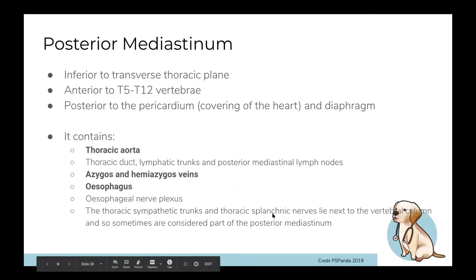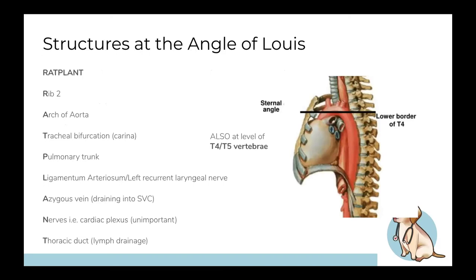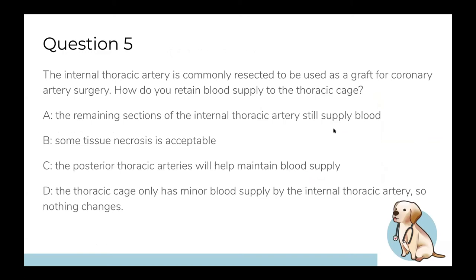Returning to structures at the angle of Louis now that we know more: at the level of rib 2 anteriorly and T4 posteriorly, you have the arch of the aorta. The left recurrent laryngeal nerve comes under the arch of the aorta so it's also at that level. The azygos vein drains into the superior vena cava here - the SVC enters the heart right there. The tracheal bifurcation (carina) occurs at this level. The ligamentum arteriosum and pulmonary trunk are also at this level.